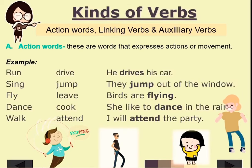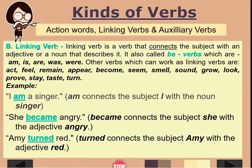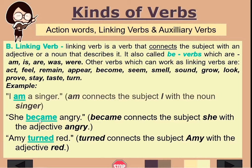Next we have linking verbs. A linking verb connects the subject with an adjective or a noun that describes it. They are also called 'be verbs': am, is, are, was, were. For example, 'I am a singer' — the word 'am' is the linking verb connecting the subject 'I' to the noun 'singer.' 'She became angry' — 'became' connects the subject 'she' to the adjective 'angry.'